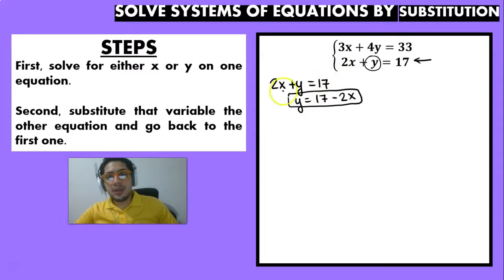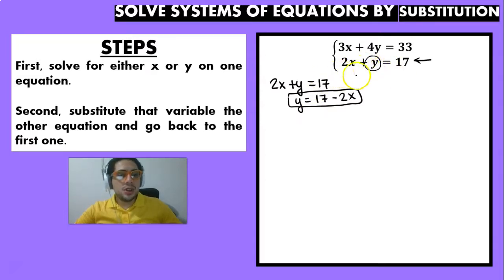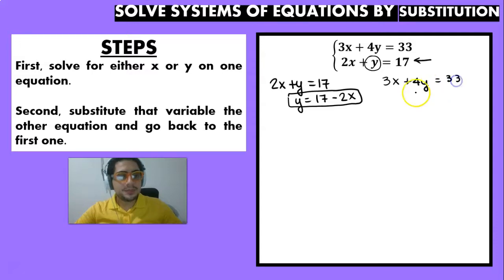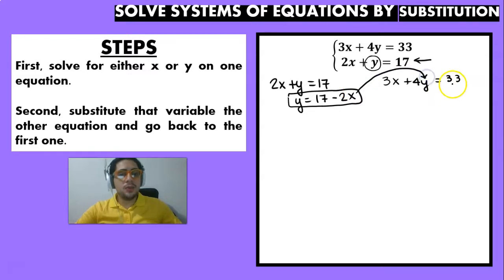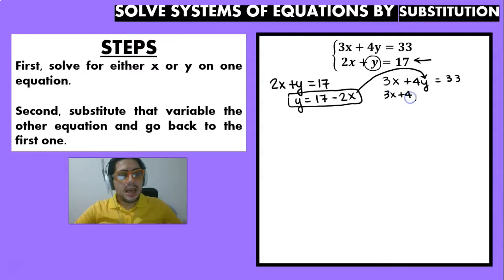Now the second step is to substitute that variable into the other equation — the one we didn't use. So we go to the first equation: 3x plus 4y is equal to 33, and we substitute the value of y. It becomes 3x plus 4 times (17 minus 2x) equals 33.